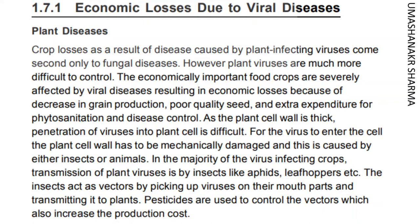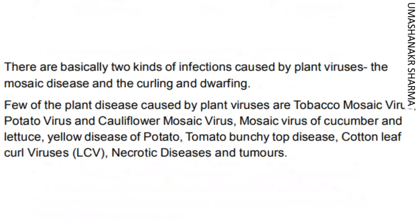As the plant cell wall is thick, penetration of viruses into plant cells is difficult. The plant cell wall has to be mechanically damaged, caused by either insects or animals. In the majority of virus-infecting crops, transmission of plant viruses is by insects like aphids and leafhoppers. The insects act as vectors by picking up viruses on their mouthparts and transmitting them to plants. Pesticides are used to control the vectors, which also increases production cost. There are basically two kinds of infections caused by plant viruses: the mosaic disease and the curling and dwarfing.